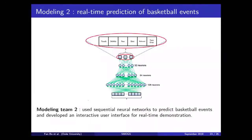The second modeling team aimed to predicting basketball events on the court in real time and in an interactive fashion. They used sequential neural networks to do the job, and they also developed an interactive web app as a user interface.